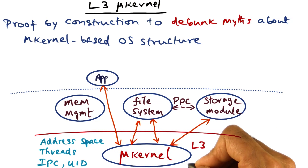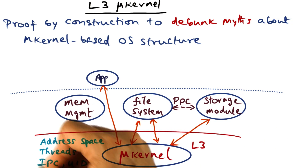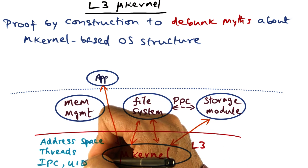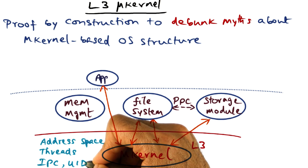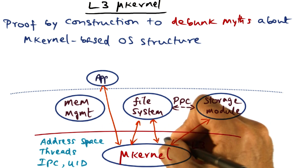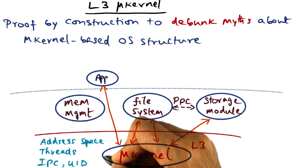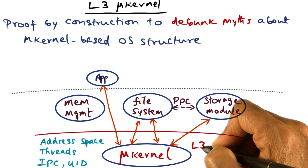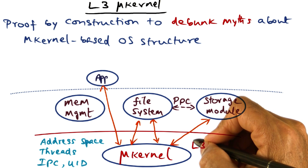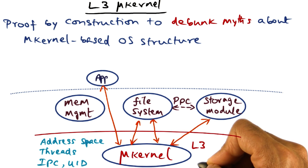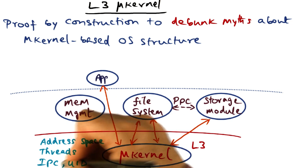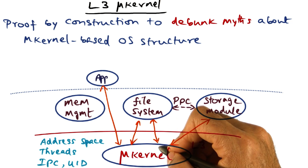L3 microkernel, being a microkernel, has a minimal set of abstractions: address space, threads, inter-process communication, and a service for providing unique IDs for subsystems that live on top of the microkernel. The exact details of these mechanisms provided by L3 microkernel are not that critical, but the important thing is the microkernel provides the minimal set of abstractions — namely address space, threads, inter-process communication, and UID.